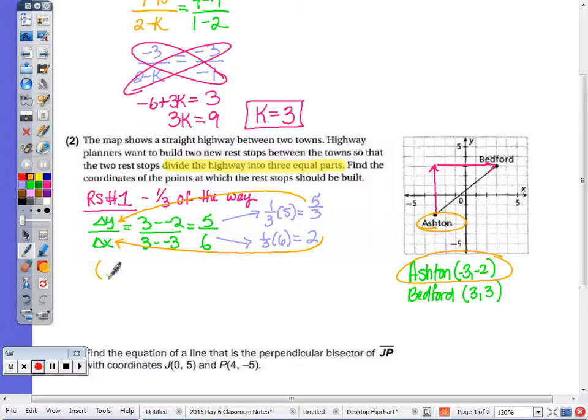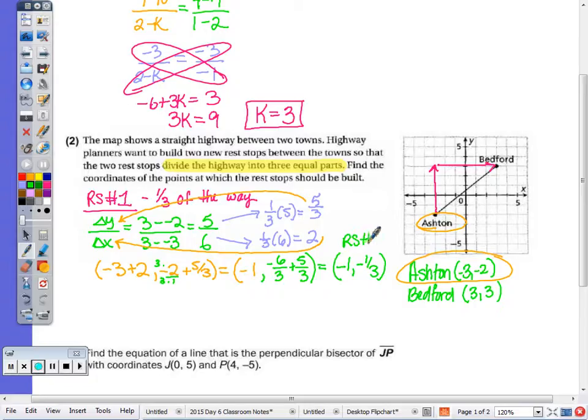So I'm going to do it horizontal as I don't have much room. So negative 3 plus 2, and then negative 2 plus 5 thirds. Negative 3 plus 2 is negative 1. I need to change this to a denominator of 3, so times 3, times 3. And this is negative 6 over 3, plus now 5 over 3, which gives me rest stop number 1 at negative 1, negative 1 third. So rest stop number 1.